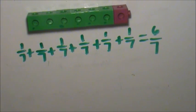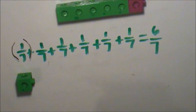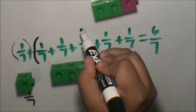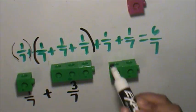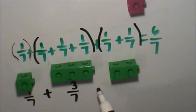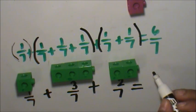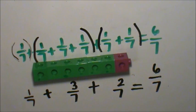Let's decompose another way. This is 1/7th. These are 3/7ths. These are 2/7ths. 1/7th, 3/7ths, and 2/7ths — my fraction is still 6/7ths.